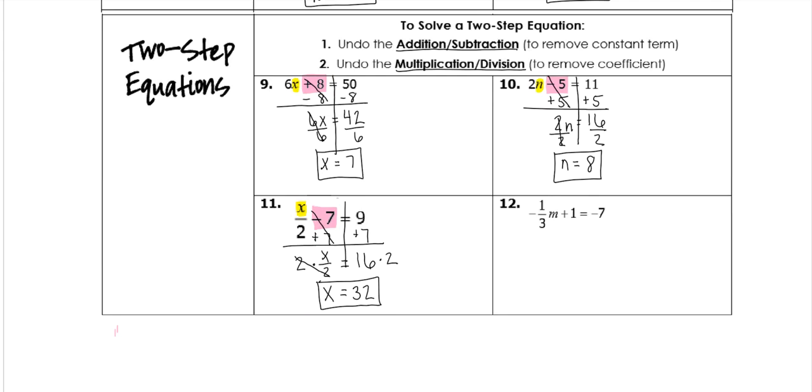The last one. We have our variable here. Look for the addition or subtraction first. And since we have adding 1, we want to subtract 1 from both sides. So minus 1, minus 1. This will give me 0. On the left, I'm left with negative 1 third m. And then negative 7 minus 1 is negative 8. Please make sure to use a calculator if you have trouble with all the negatives and adding of those.